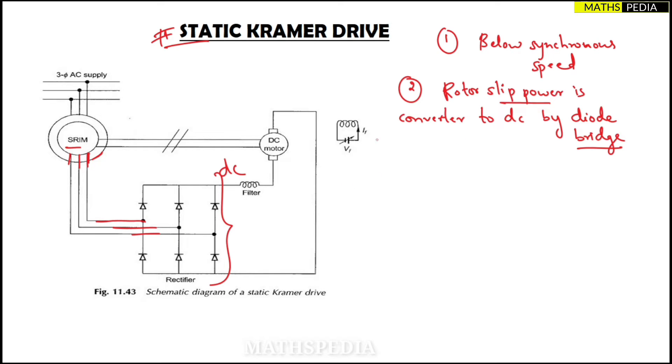Third point: after converting to DC, DC power is then fed to - you can see where it is taken - the DC motor. This DC motor, if you observe, is then mechanically coupled to the slip ring induction motor.